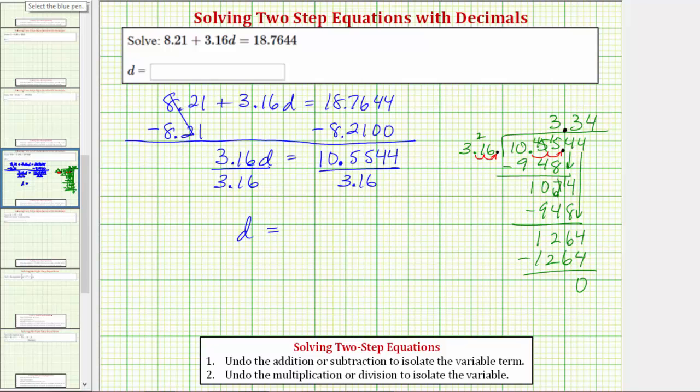Meaning the solution to the equation is d equals 3.34. Before we go, let's check our work by substituting 3.34 into the equation for d to make sure it satisfies the equation. Forming the substitution, we would have 8.21 plus 3.16 times 3.34 equals 18.7644.